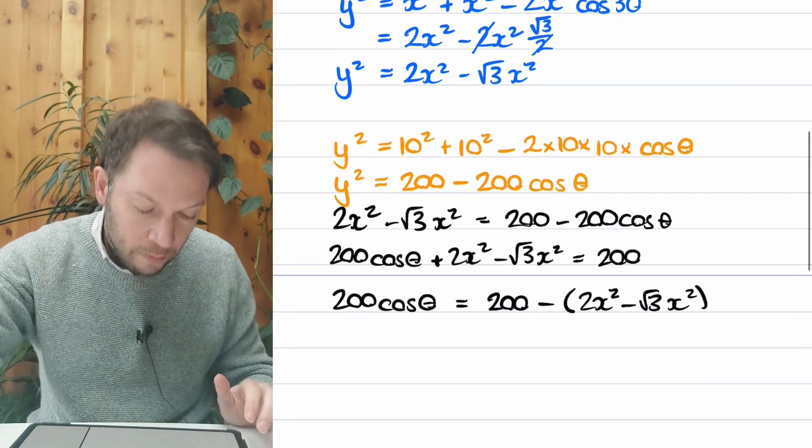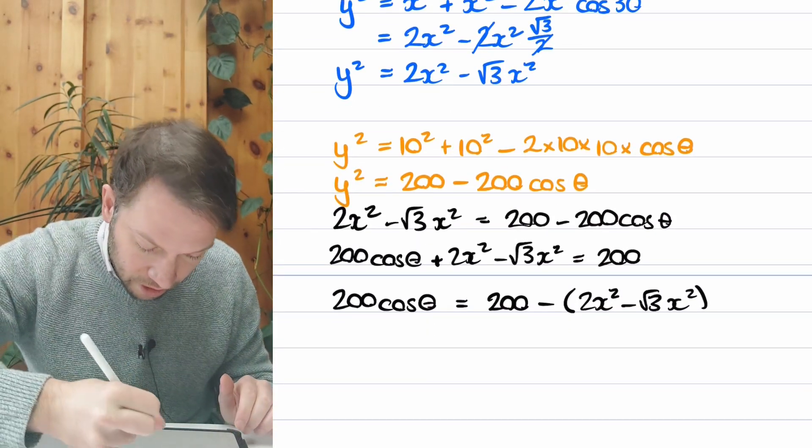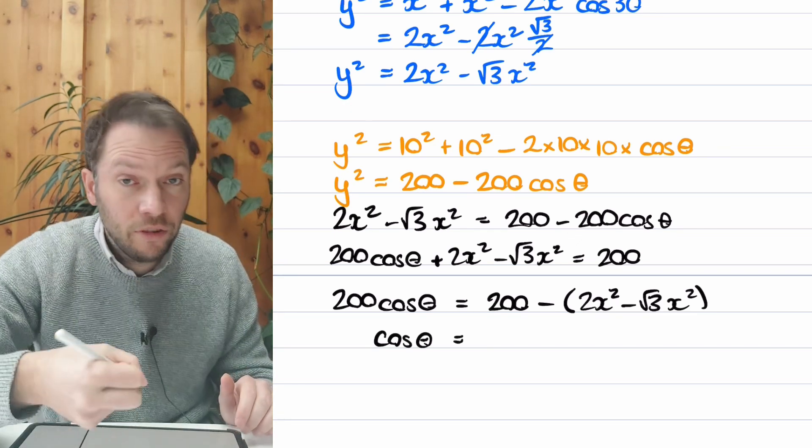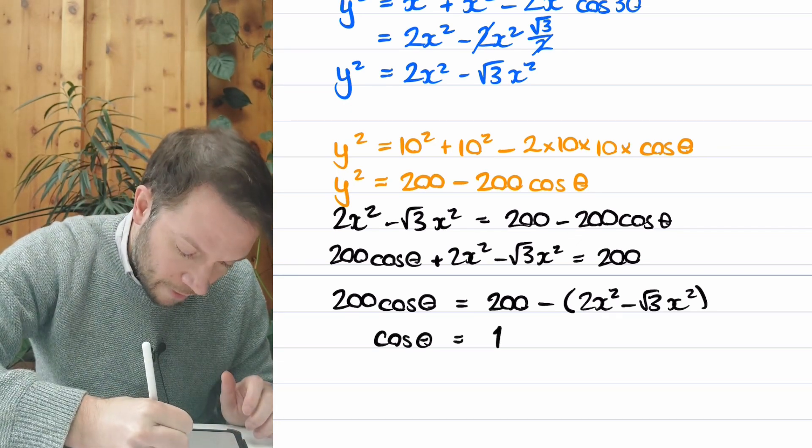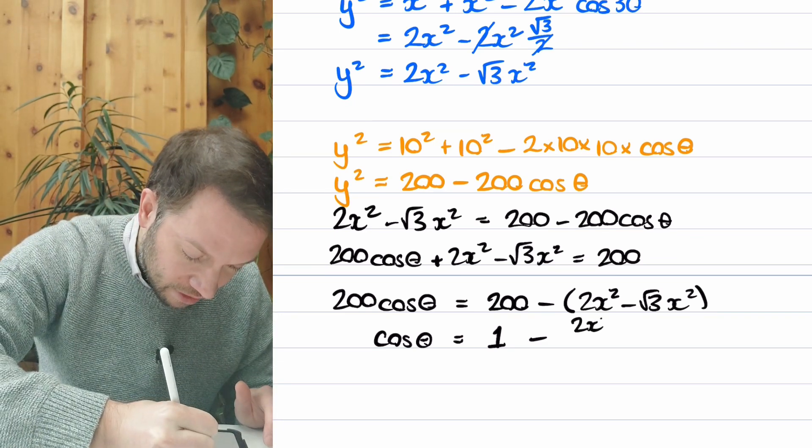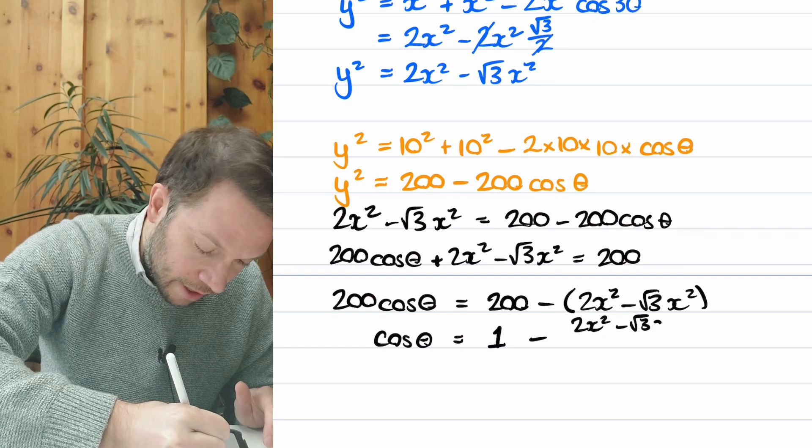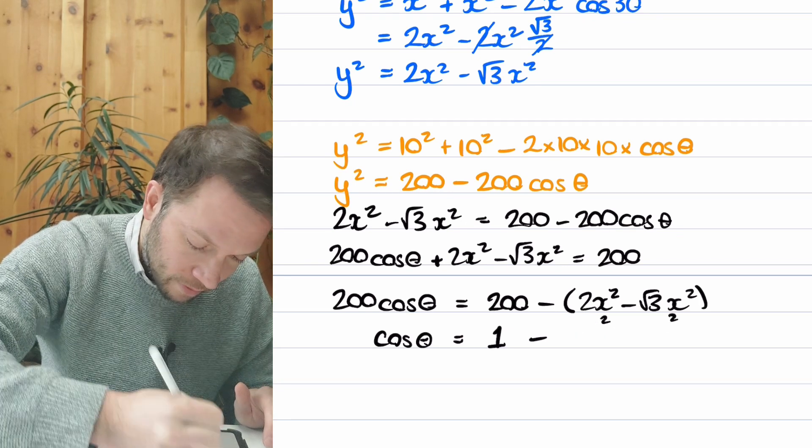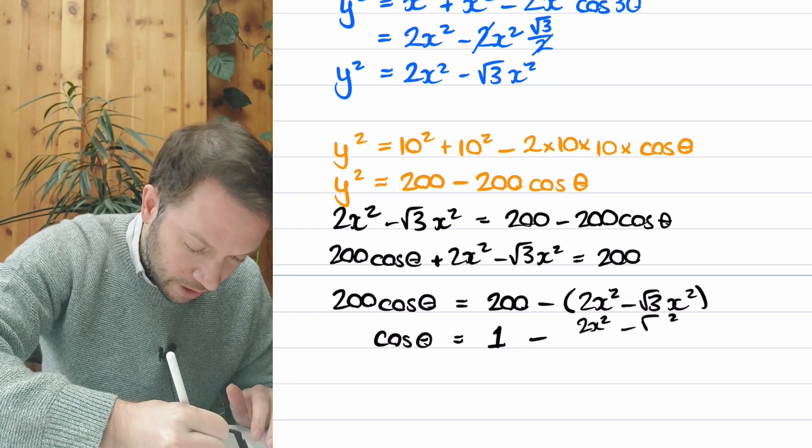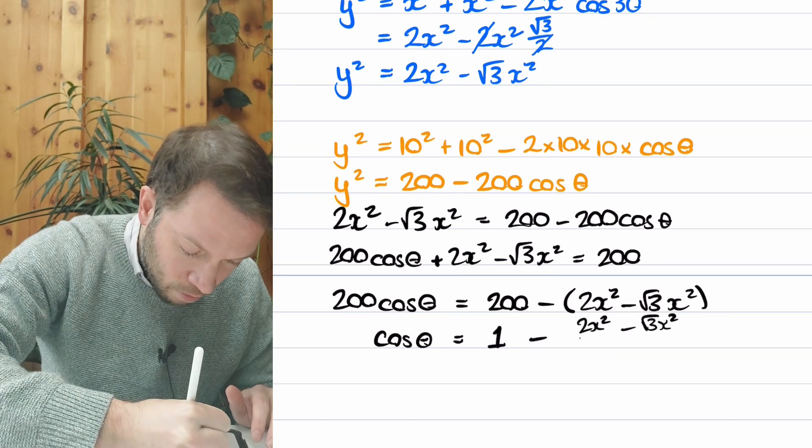And we're getting very close to target expression now. We want cos of theta on its own. I'm going to divide both sides by 200. So if we do that, the 200 divided by 200 is just 1. And this whole bracketed thing, I could put over 200. So we're going to get 2X squared minus root 3X squared all over 200.